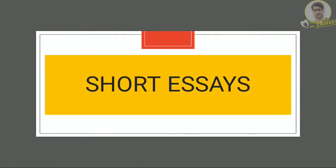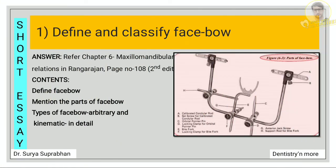Moving on to the short essays. First question: define and classify face bow. First write what is face bow, then write about the parts of the face bow, and then classify it into arbitrary and kinematic — write a few lines about each.